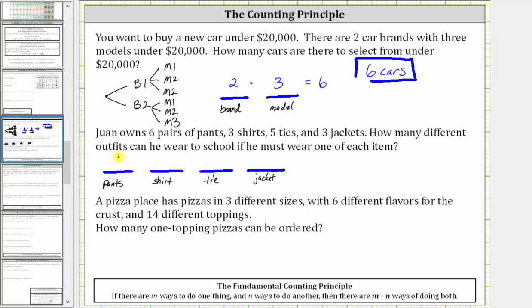And since there are six pairs of pants, there are six ways to choose the pants, times, since there are three shirts, there are three ways to choose the shirt, times, since there are five ties, there are five ways to select the tie, times, since there are three jackets, there are three ways to select the jacket.